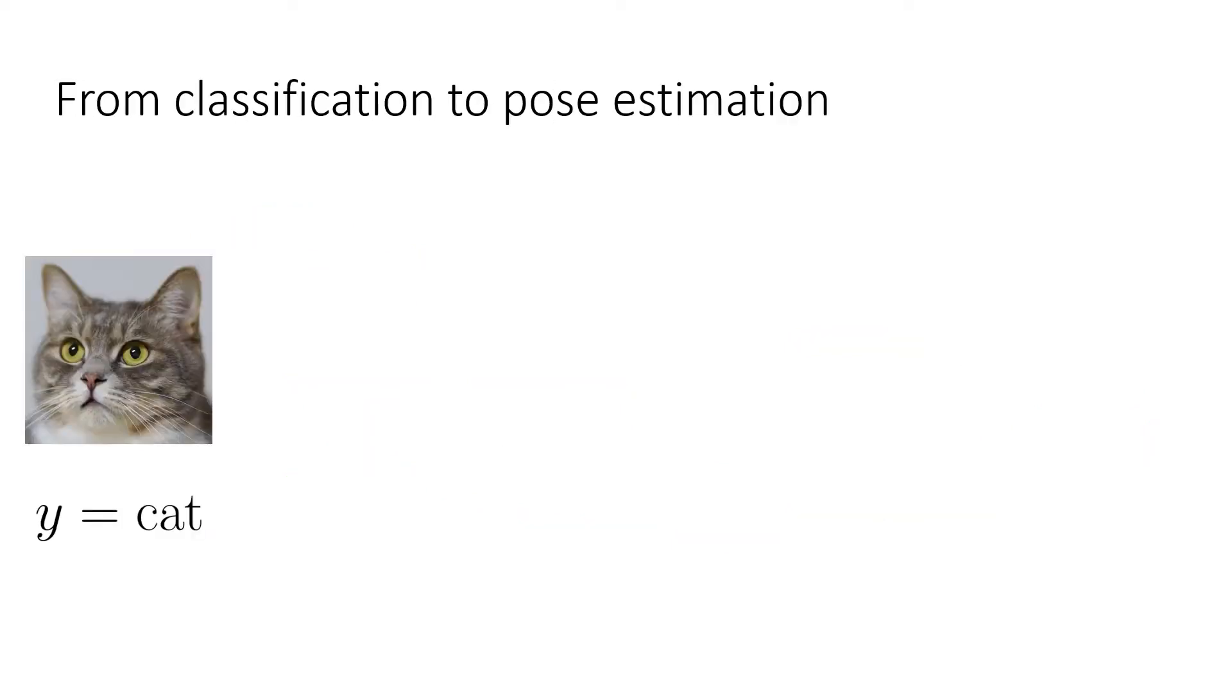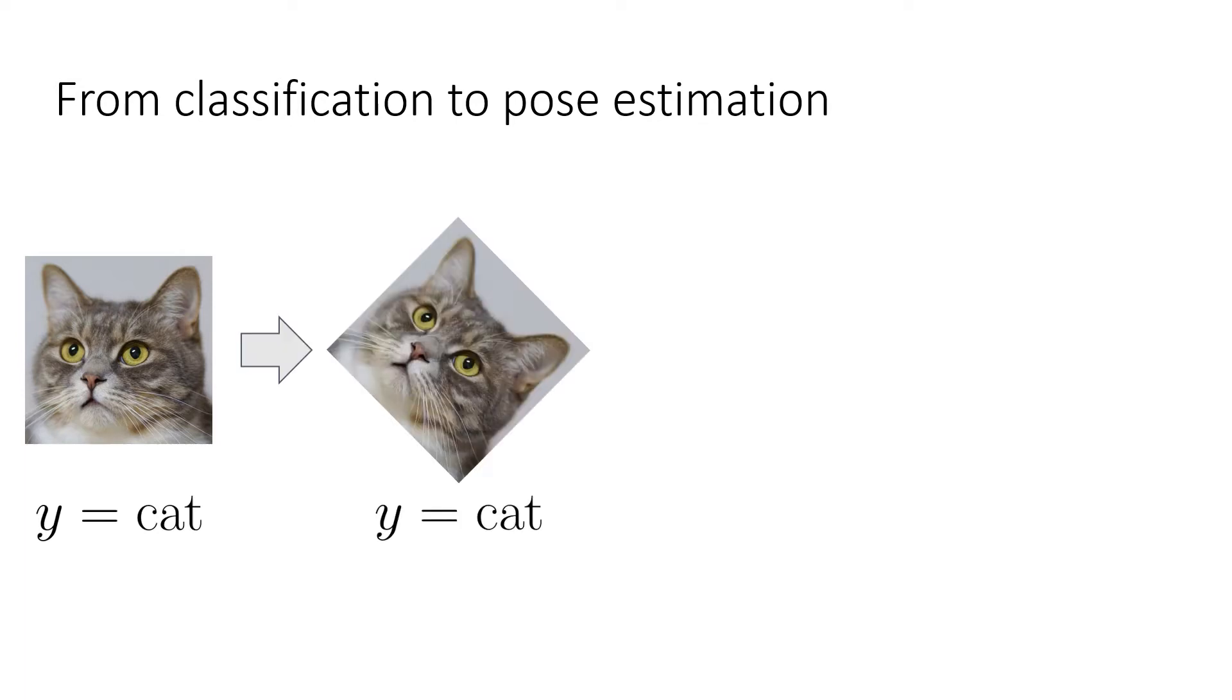However, how do things change when transitioning from classification to pose estimation? Let us take a step back to look at the bigger picture. In tasks such as classification, invariance under most image transformations is required. For example, if you rotate this image of a cat, the class of the image will not change, as it still displays a cat.